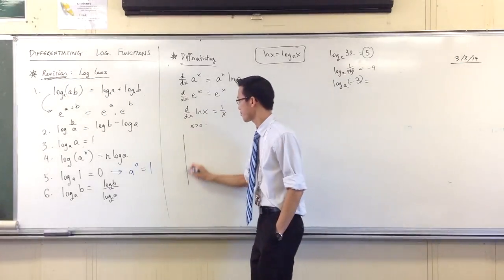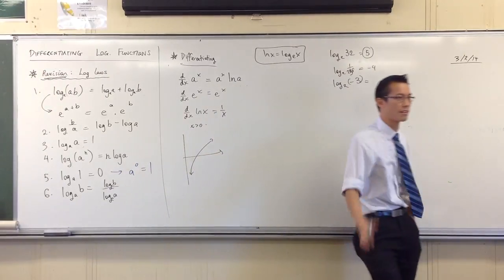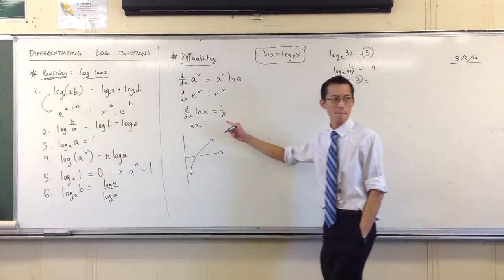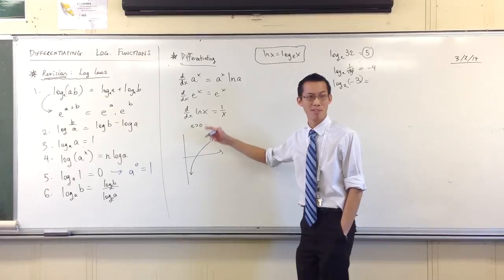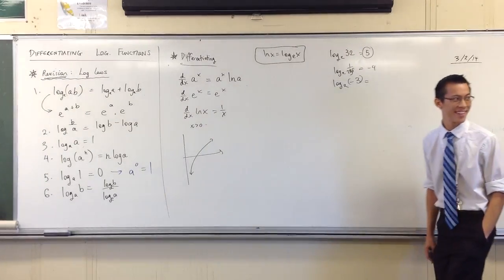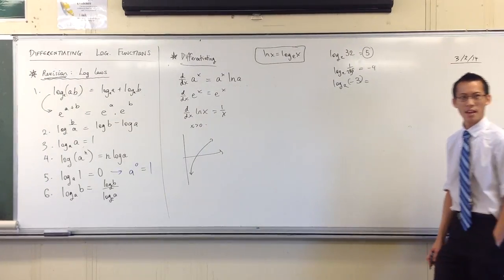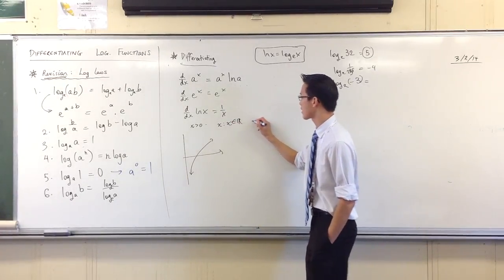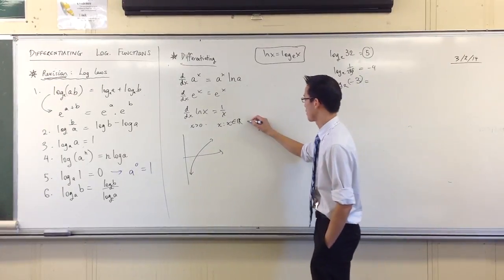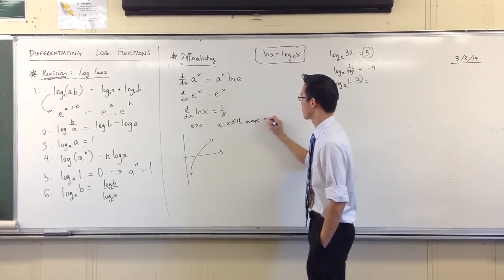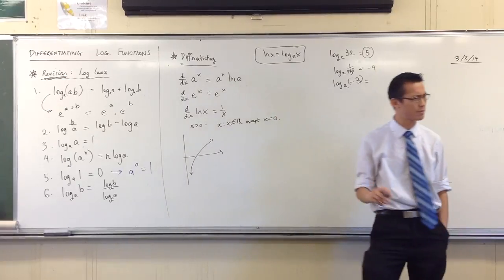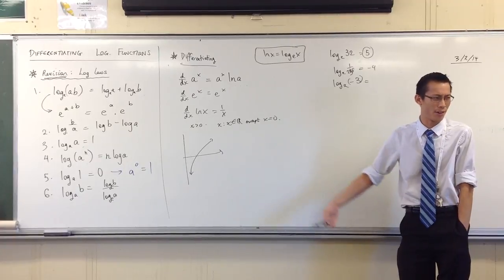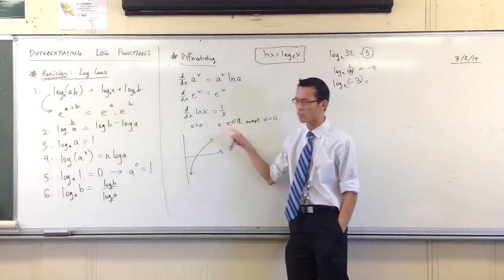Which is why when you take this graph, it only exists for positive x. Great. Well, if the derivative, where does that exist? Not a rhetorical question. Where does 1 over x exist? It exists for all real values of x but 0. So you're kind of, as a mathematician, not as someone who's trying to sit a test later on, as a mathematician you should ask that question. Why is that?